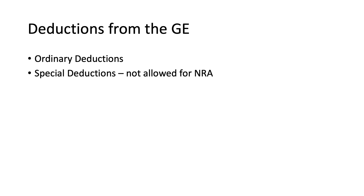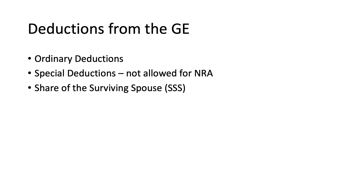What are the allowable deductions from the gross estate? There are two kinds: ordinary deductions and special deductions. The difference is that resident citizens, resident aliens, and non-resident citizens are allowed ordinary deductions and special deductions, while a non-resident alien is not allowed to deduct special deductions.